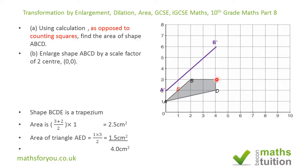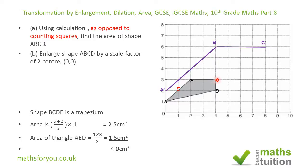For point C with coordinates (4, 3), doubling gives (8, 6), so C prime is at (8, 6). To confirm, since B to C is 2 units parallel to the x-axis, we can double that to 4 units to locate C prime. This confirms the position of C prime after enlargement by scale factor 2.